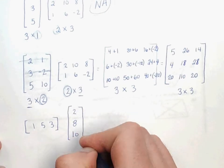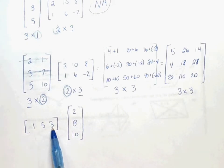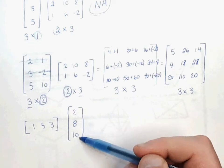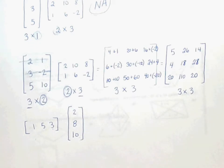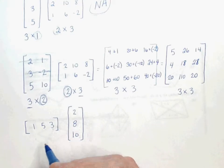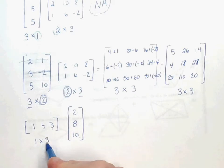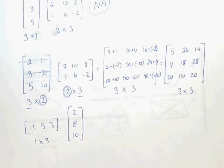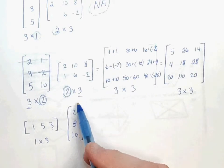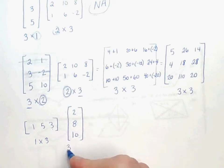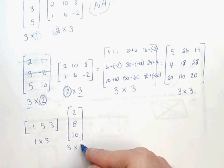Our first matrix is 1, 5, 3, and our second matrix is 2, 8, 10 — vertically. Our first matrix has one row and 1, 2, 3 columns. Our second matrix has 1, 2, 3 rows and 1 column.